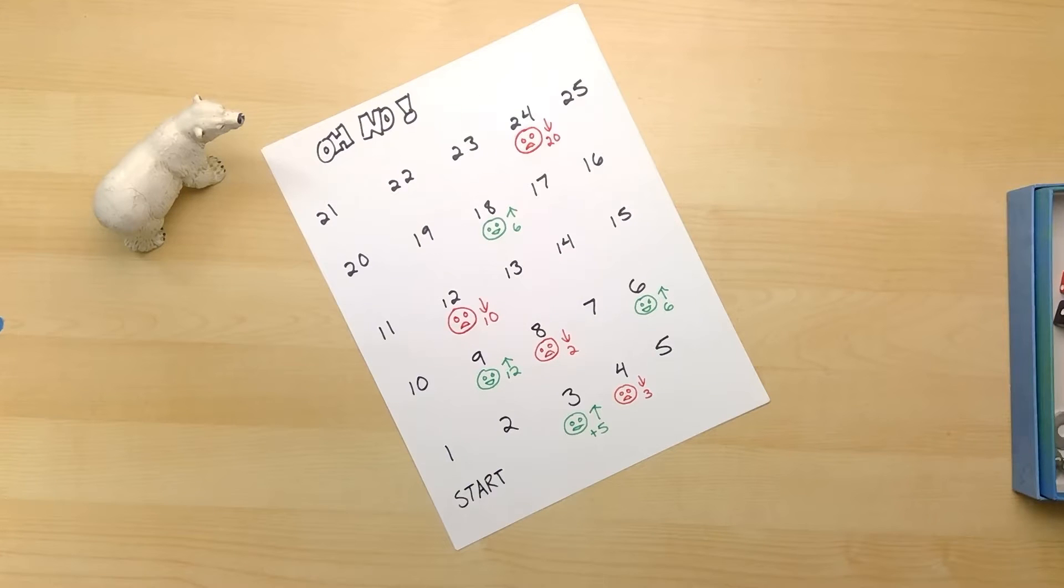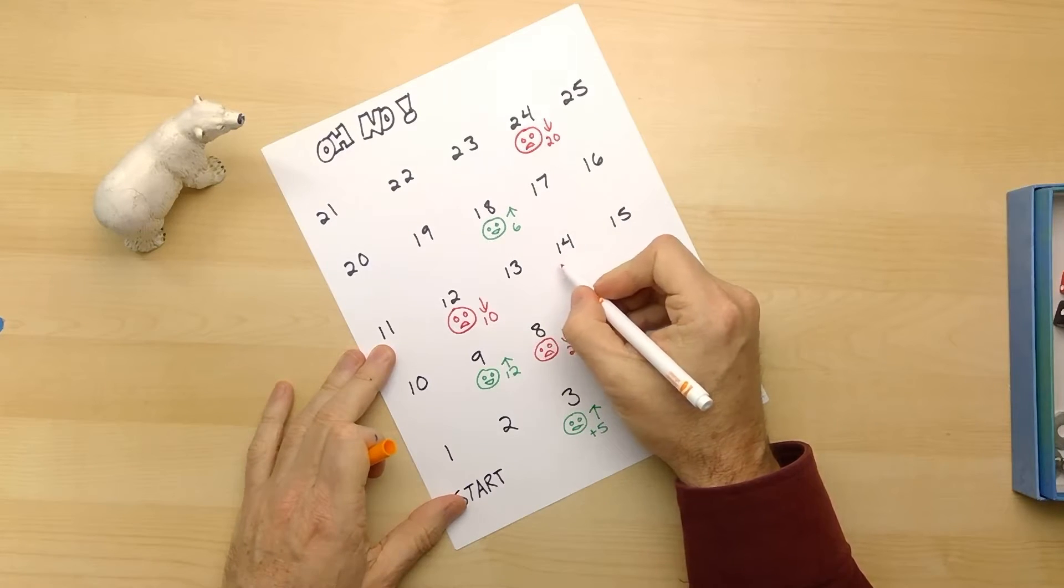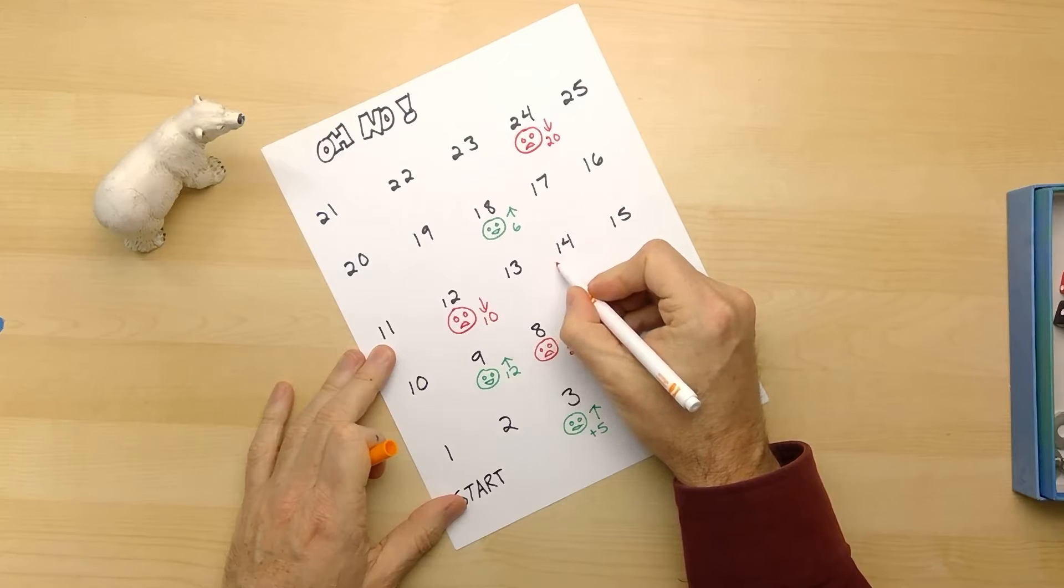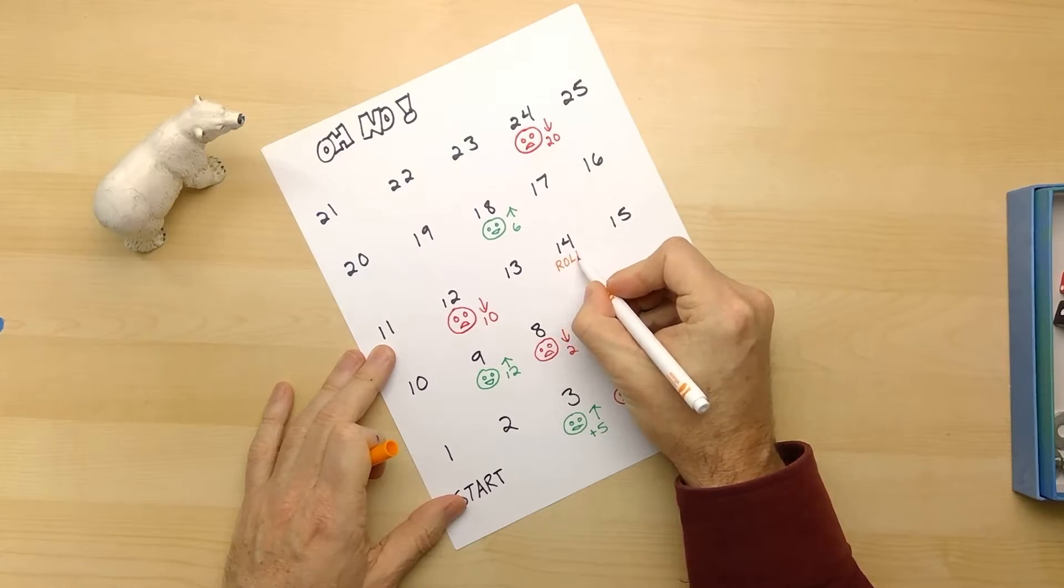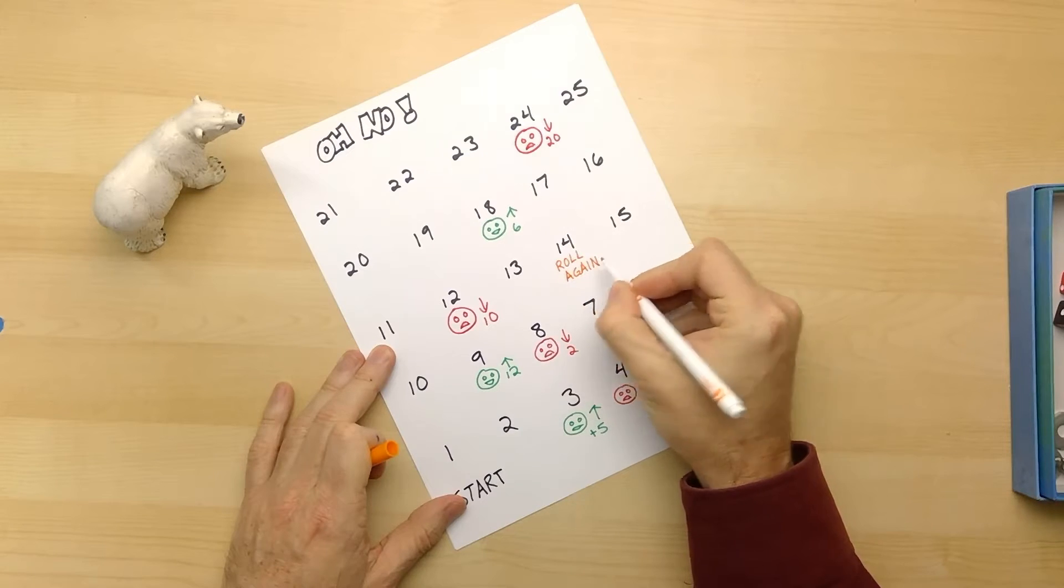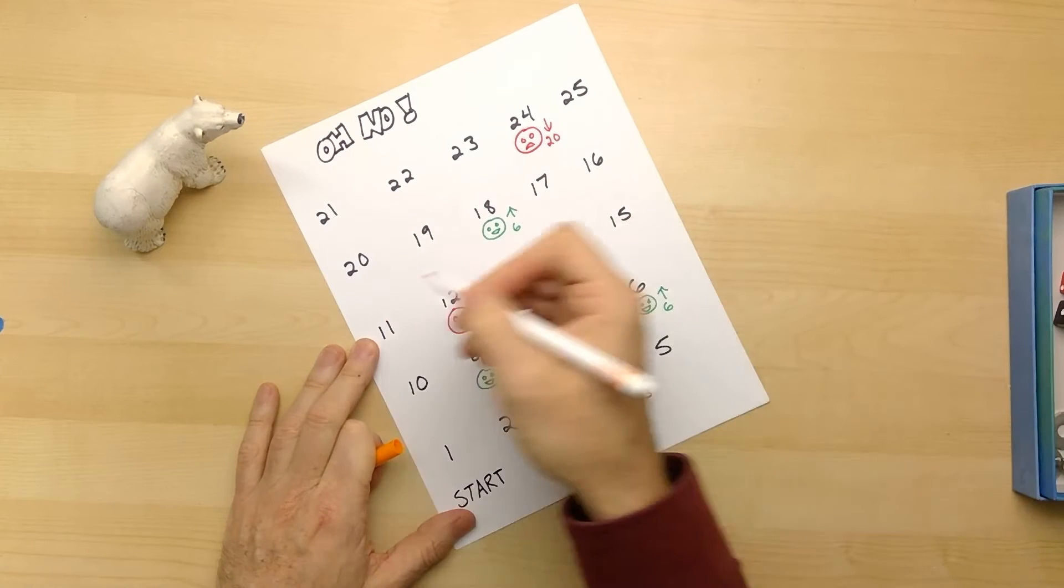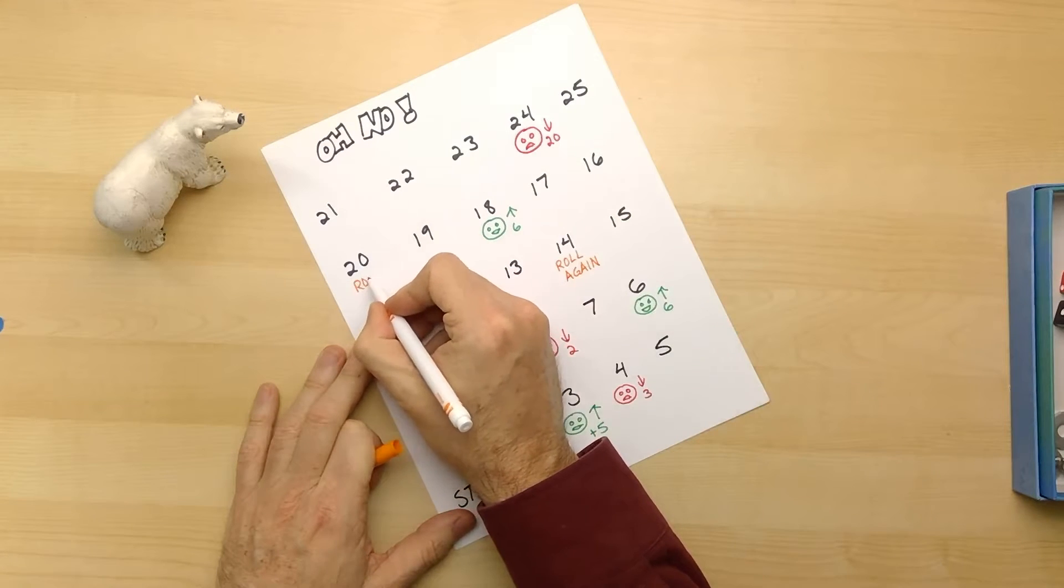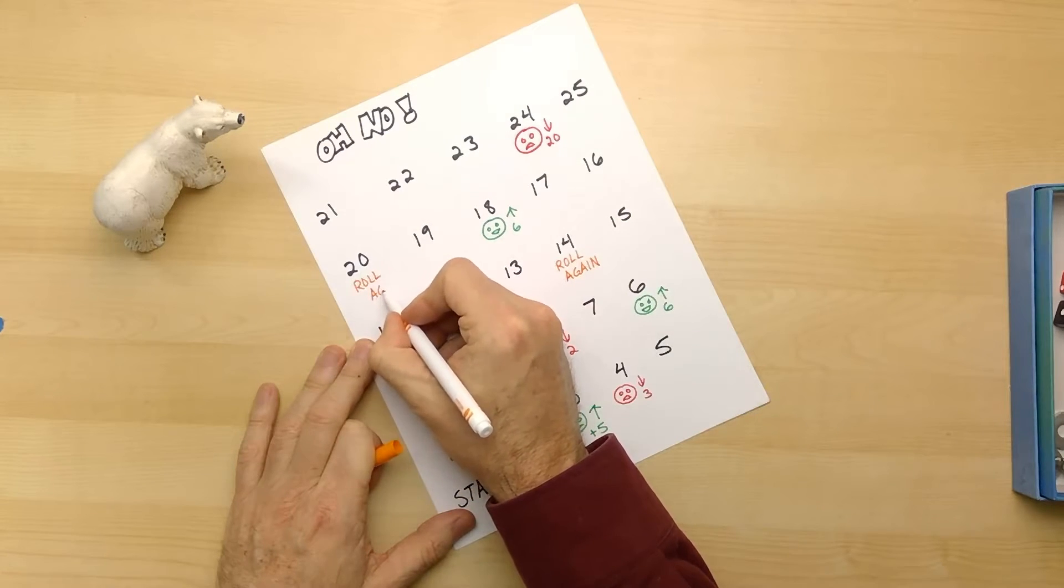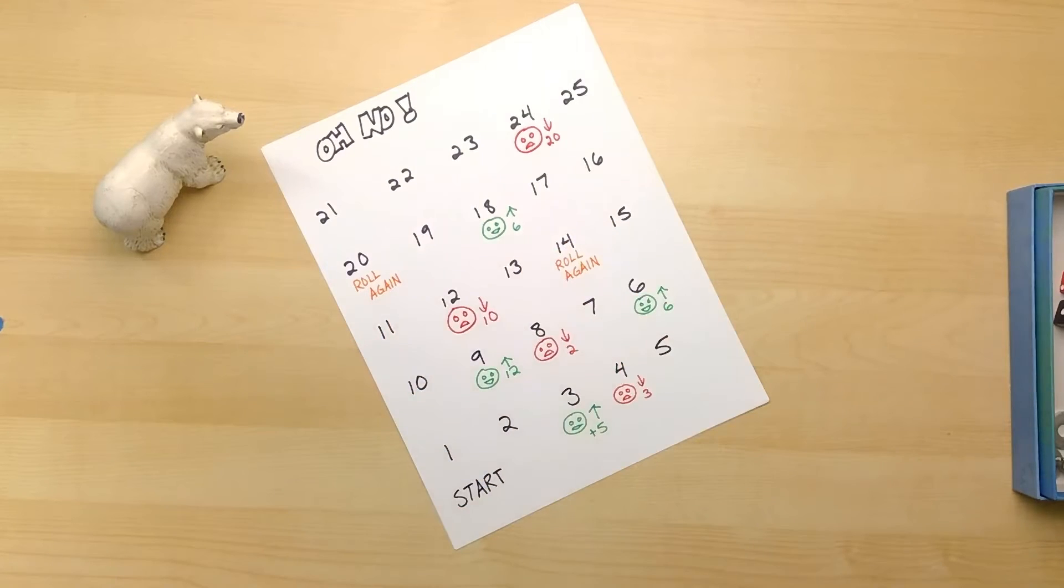Let's add something else to our board. Let's add maybe something special, like you end up on the number 14 and you get to roll again. We can put a couple of these in. What if we're on the number 20 and we get to roll again? Okay, we can put a couple of those in.